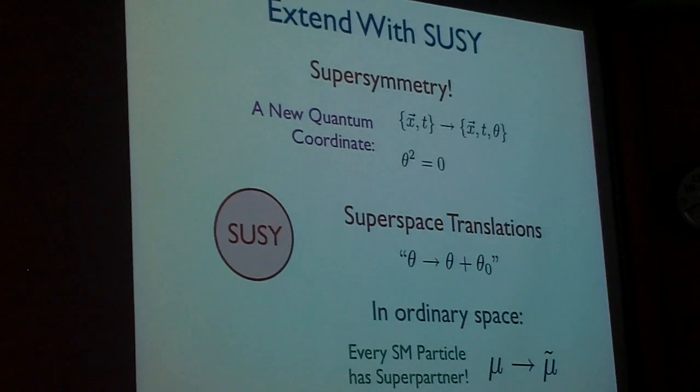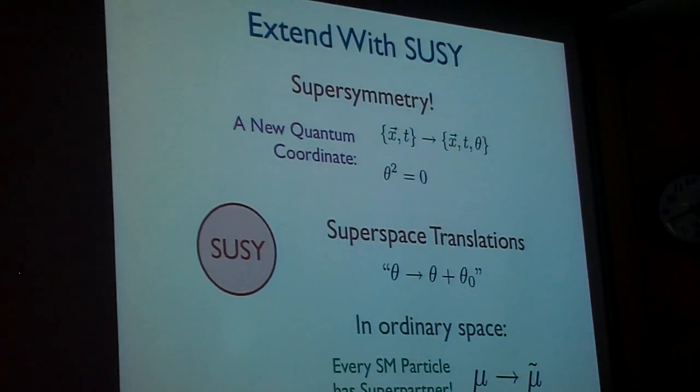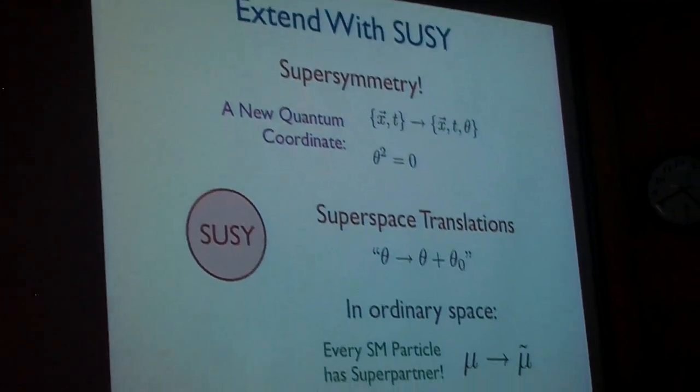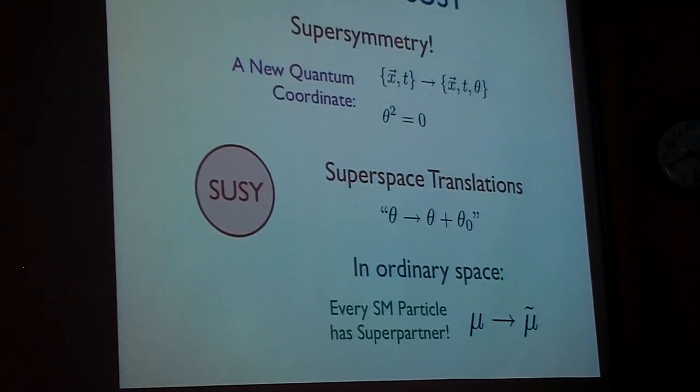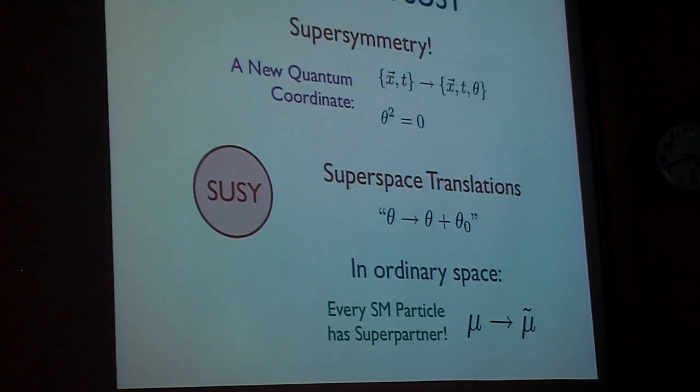And you might say, oh, this is a beautiful extension of space-time symmetry. And if you posit the existence of a translational invariance in superspace, then you would have conservation of a supercurrent. And this would be a profound fact of our universe, if it were true.